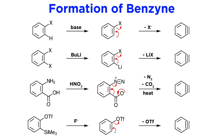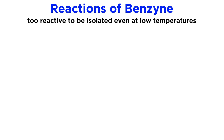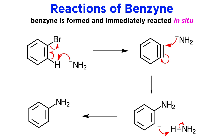Arynes like benzyne are far too reactive to be isolated, even at very low temperatures. They are typically formed and then reacted in situ, such as the case where the base that generates the carbanion is also the nucleophile that attacks once benzyne has formed, as is seen here with the production of aniline from bromobenzene.